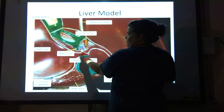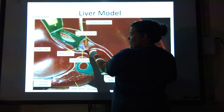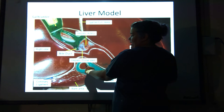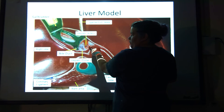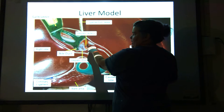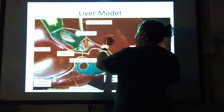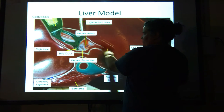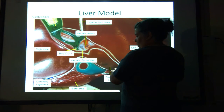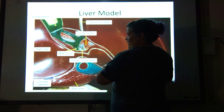Gallbladder. There's my bile duct in green, my hepatic portal vein in purple, and my hepatic artery in red. Ligamentum teres is still there. Left lobe, right lobe, caudate lobe, bare area, coronary ligament.